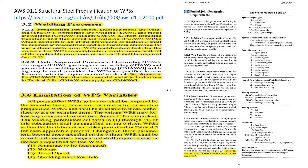The symbols for weld types: 1 is a square groove, 2 is a single V groove, 3 is a double V groove, 4 is a single bevel groove, then you have 5, 6, 7, 8, 9, and 10.